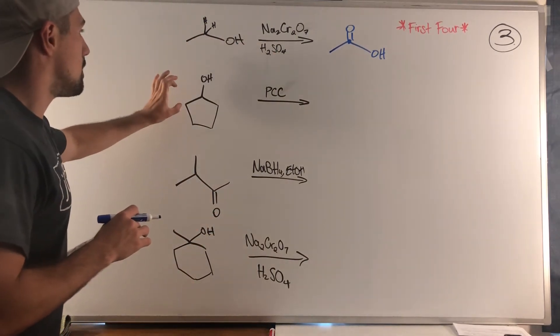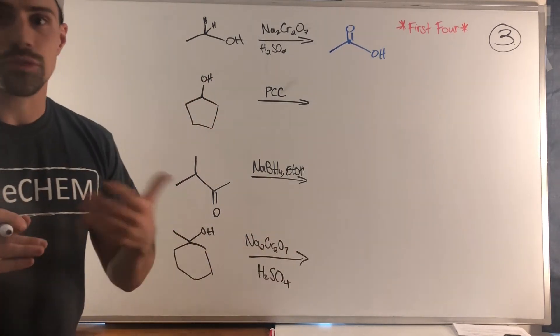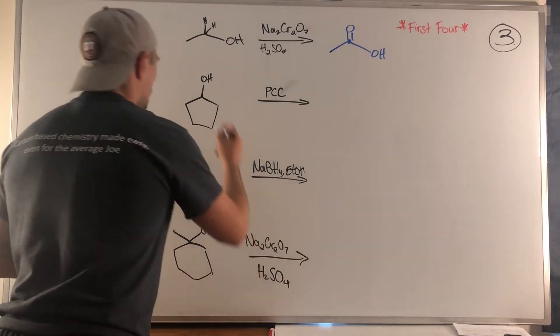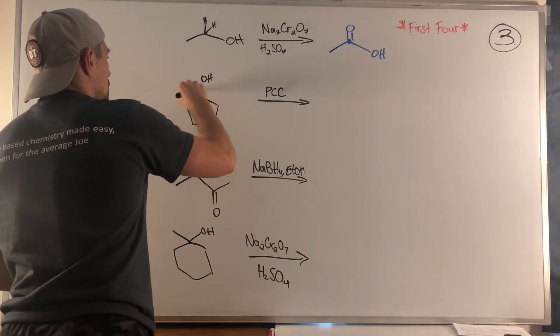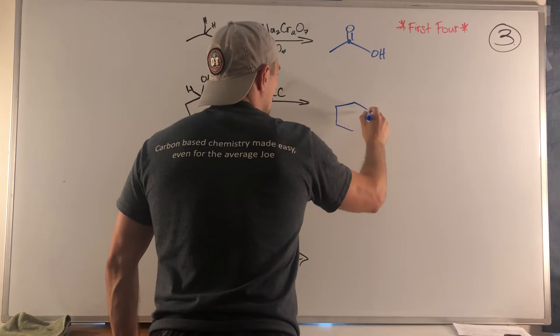In the second problem we have PCC. This is a secondary alcohol, so we have one hydrogen available. PCC is going to replace that bond to hydrogen to make that secondary alcohol a ketone.